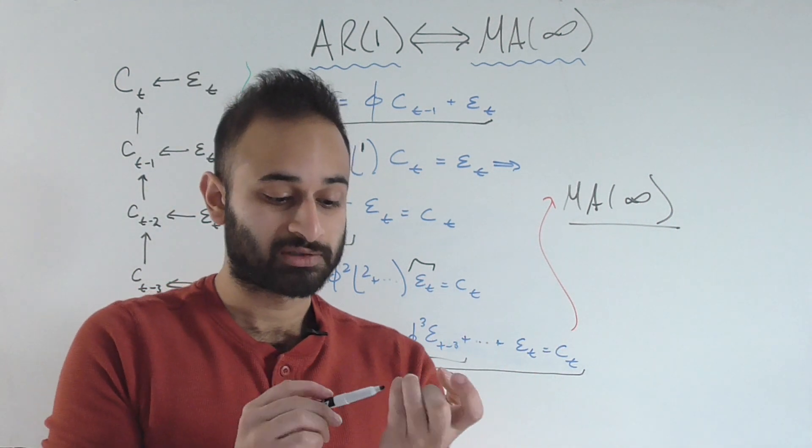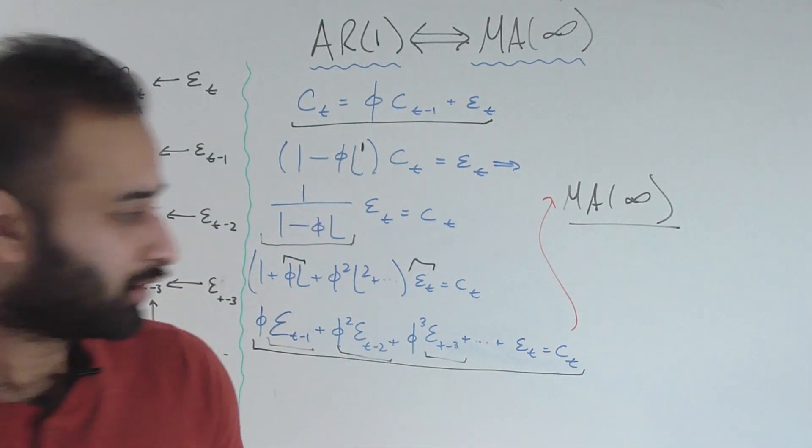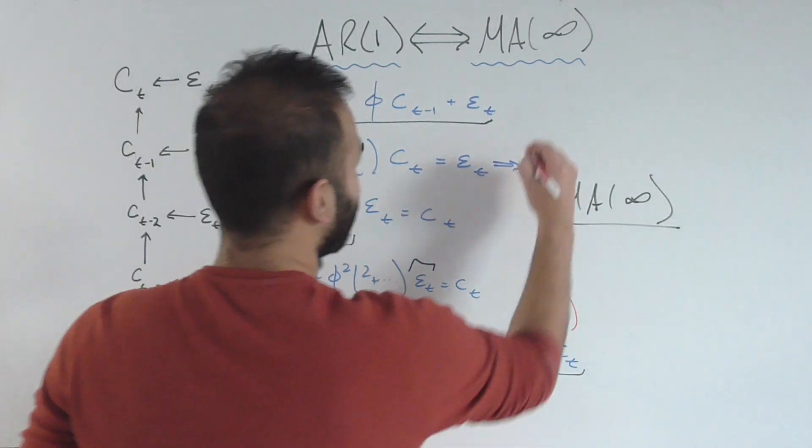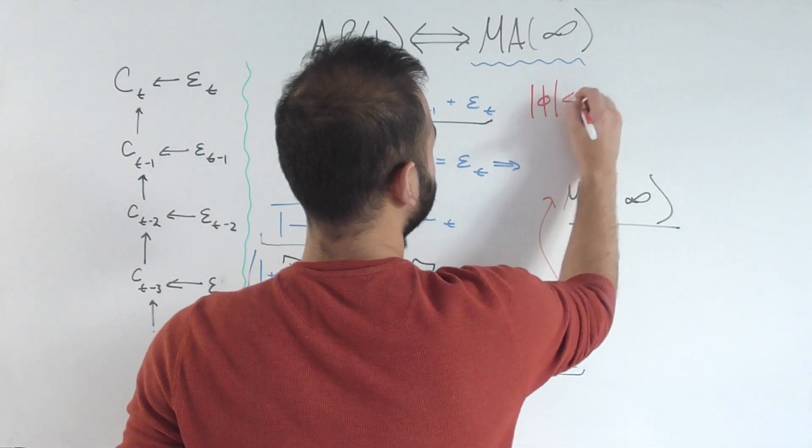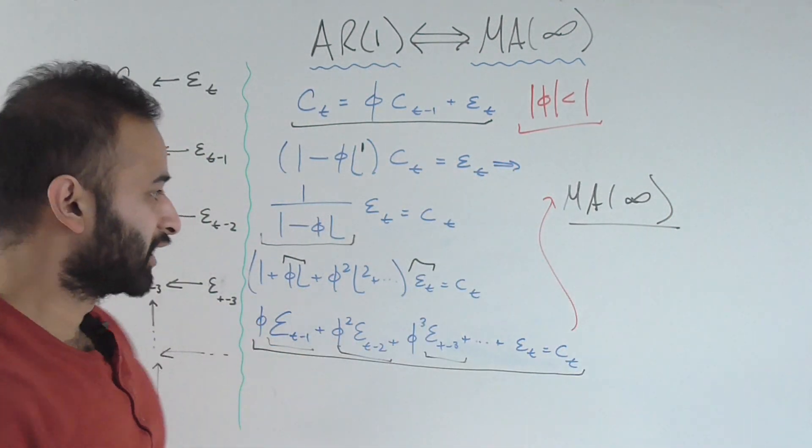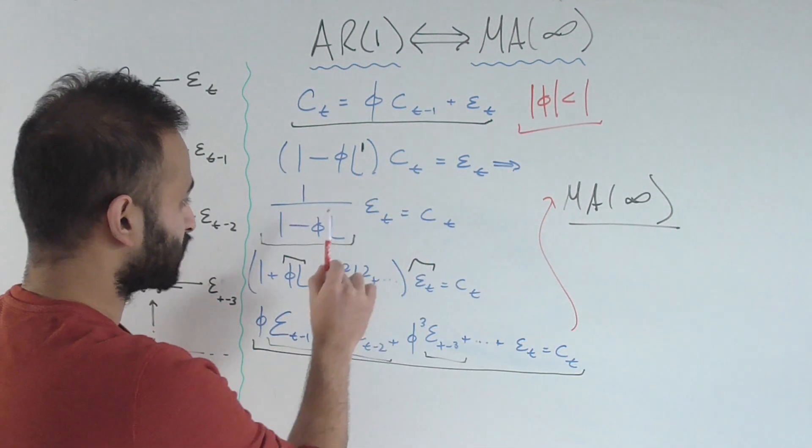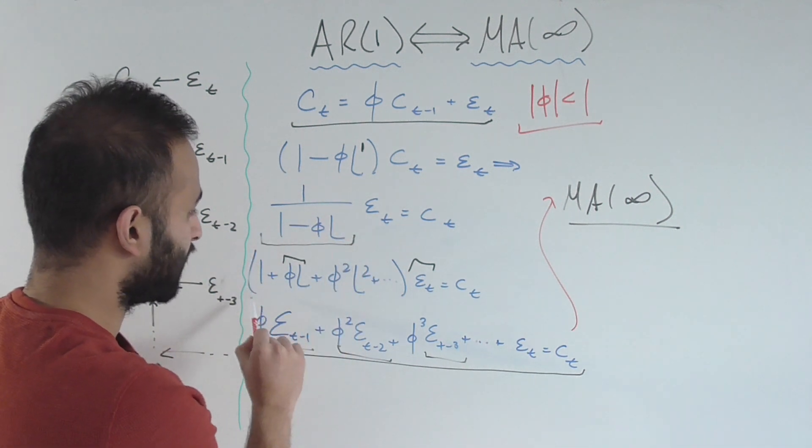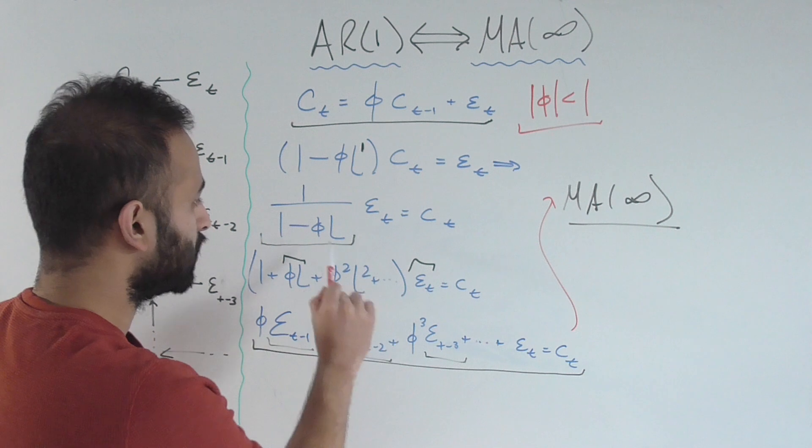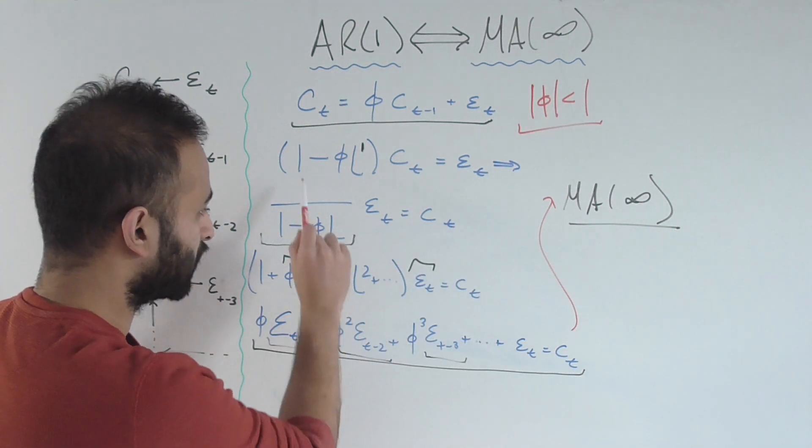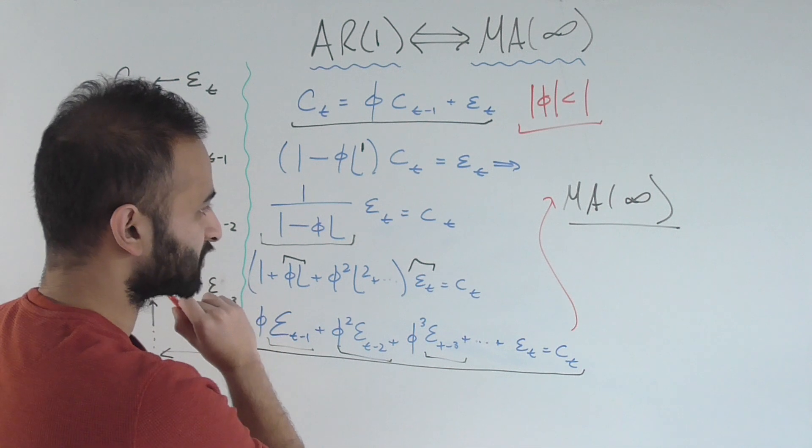Again, under a certain circumstance where φ has to be less than 1 in absolute value. That has to be true because that's what allows us to take this formulation and expand it as its infinite geometric series. We need |φ| < 1 for this to converge to this infinite sum in the first place.